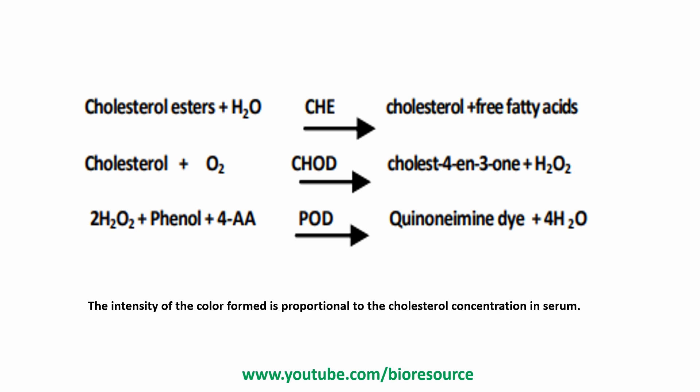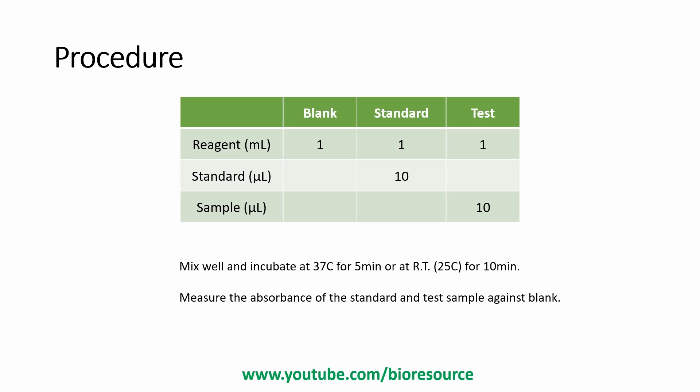The procedure involves measurement of the cholesterol sample with a reagent. For this assay we need three different tubes: one labeled blank, one labeled standard, and one for each test sample. To each tube, add 1 mL of the reagent. Add 10 microliters of the standard to the standard tube, and 10 microliters of the serum sample to the test tube. Mix all tubes and incubate at 37°C for 5 minutes. Measure absorbance using a spectrophotometer, with the standard and test sample measured against the blank.